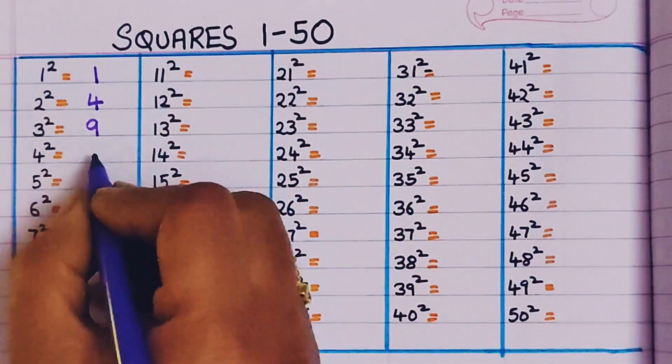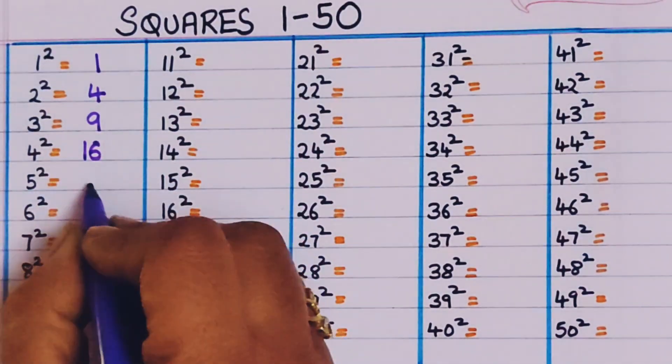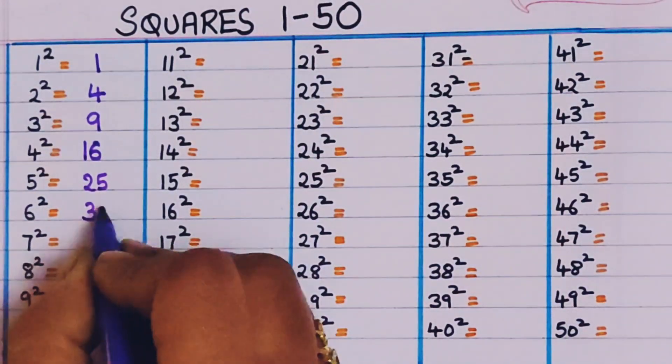4 square, 16. 5 square, 25. 6 square, 36.